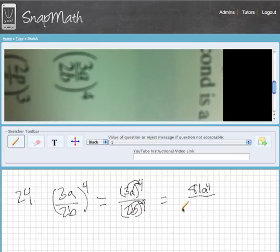2 to the fourth is going to be 64, and then it's b to the fourth. So this will be your answer right here.